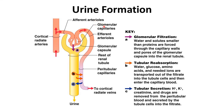To recap: the first step is glomerular filtration — water and solutes smaller than proteins are forced through the capillary wall and pores of the glomerular capsule into the renal tubules. Next, renal tubular reabsorption takes place — water, glucose, amino acids, and needed ions are transferred out of the filtrate into the tubule cells and then into capillary blood. Finally, tubular secretion removes any harmful substances not absorbed during filtration, leading to the final production of concentrated urine.